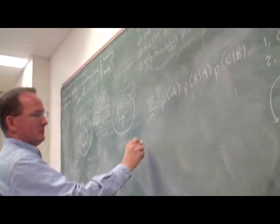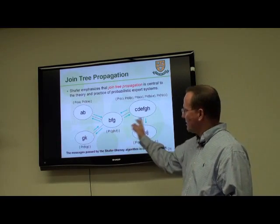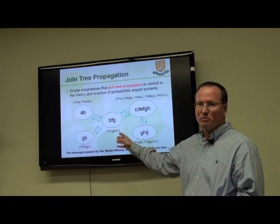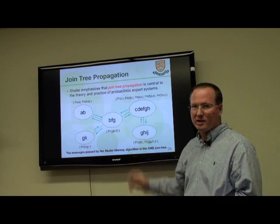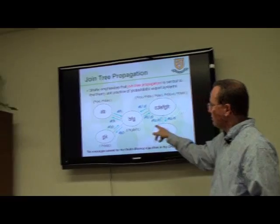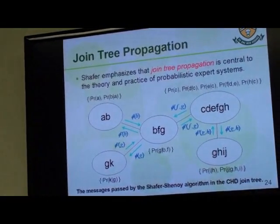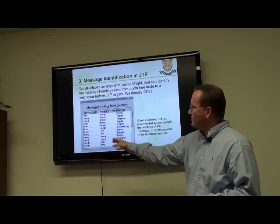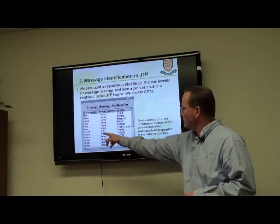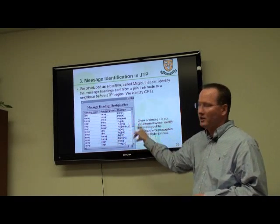The idea of inference is that you have to pass messages or probability distributions within this joint tree. So they would calculate all of these probability tables and send them one at a time in a certain sequence. What we've been able to do is identify the messages that will be sent within this joint tree, so this sending node will send the receiving node these particular messages.